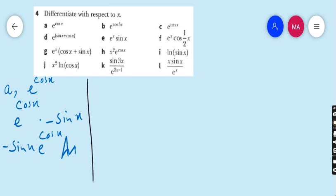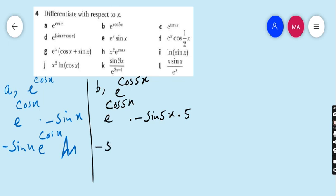Now come to part B. Part B is e^(cos 5x). Again, the derivative of e^(cos 5x) is e^(cos 5x), multiplied by the derivative of cos 5x, which gives minus sin 5x, and then multiplied by the derivative of 5x, which is 5. Our final answer is minus 5 sin 5x · e^(cos 5x).